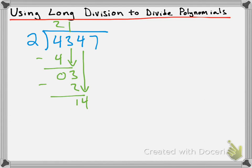We carry down our 4, and then we ask how many times does 2 go into 14? It goes in 7 times, which is 14. We subtract these two and we get 0. Last thing, we bring down the 7 and repeat this process one last time. 2 goes into 7 three times, which is equal to 6. We subtract and we get 1.